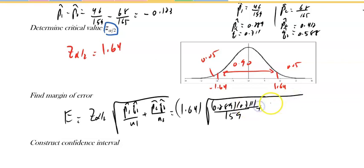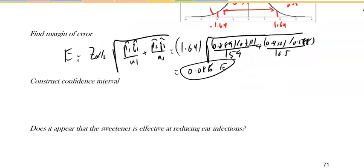Divided by 165. If I plug this I'll get 0.086—that's my error. Now I can start the confidence interval. The confidence interval will be p1-hat minus p2-hat plus or minus e. That would be negative 0.123 plus or minus 0.086. So the interval would be negative 0.209 and negative 0.037. This is how we will conclude.